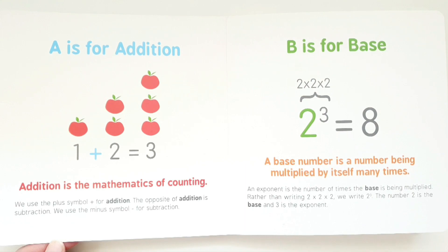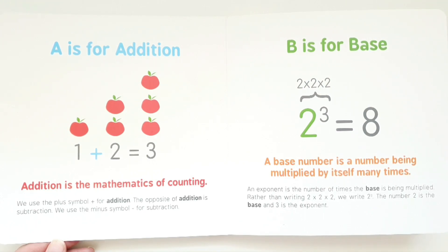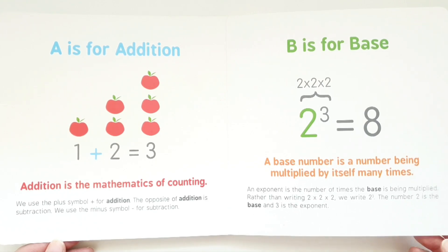B is for base. A base number is a number being multiplied by itself many times. An exponent is the number of times the base is being multiplied. Rather than writing 2 times 2 times 2, we write 2 to the power of 3. The number 2 is the base and 3 is the exponent.